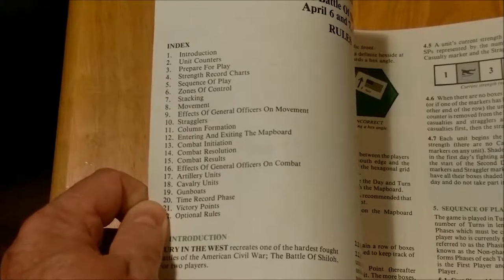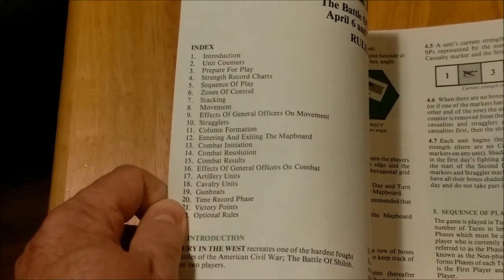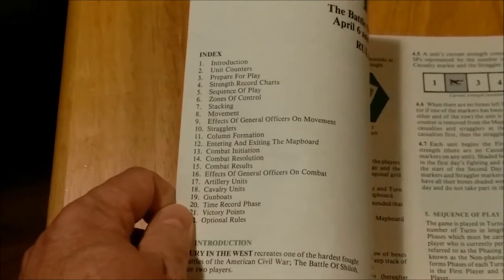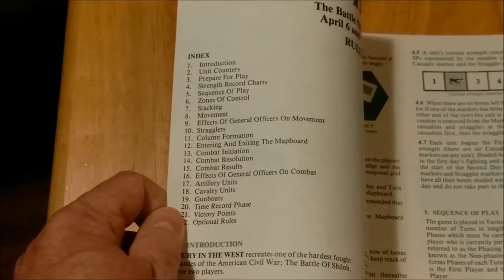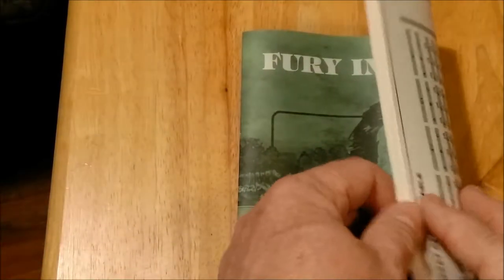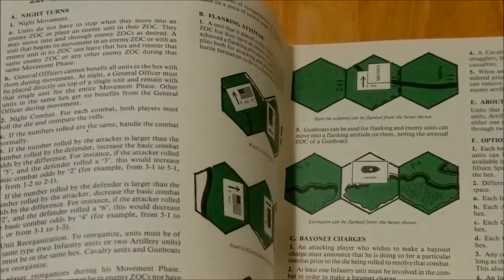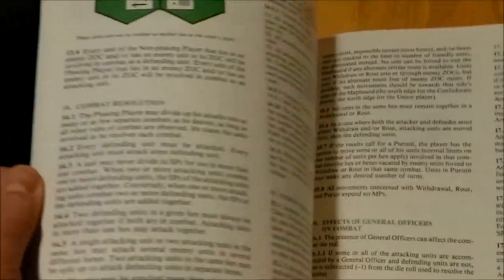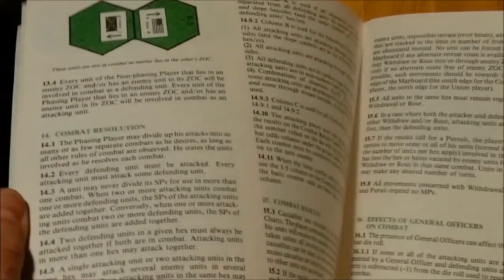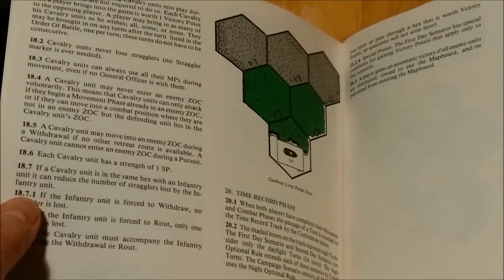Cavalry units are similar. Then we have some rules on the gunboats. And we have turn record phase, the victory point phase, optional rules. And then we have the scenarios at the back. So those are our advanced rules, so to speak.